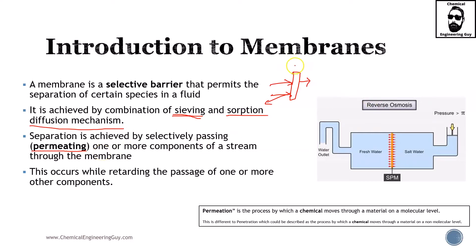The main idea is to be able to separate. If you have a left side and a right side, and both of them end up with the same conditions and the same concentrations, well, this is not a membrane by definition. You have to have a change in composition in order to consider this a membrane.